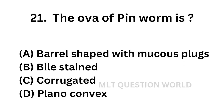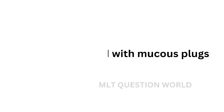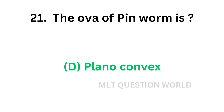Question number twenty-one: The ova of pinworm is — Option A: Barrel-shaped with mucus plugs, Option B: Bile-stained, Option C: Corrugated, Option D: Plano-convex. The correct answer is Option D — plano-convex. The ova of Enterobius vermicularis is plano-convex in shape.